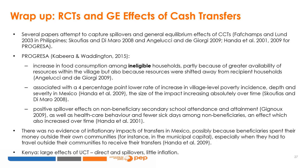Let's wrap up on randomized control trials and general equilibrium effects of cash transfers. Several papers have attempted to capture spillover effects covering PROGRESSA and other programs in Mexico and the Philippines. For PROGRESSA, there are effects in food consumption among eligible households, a reduction in poverty incidence at the village level, and positive spillover effects on non-beneficiary secondary school attendance and attainment, as well as better health care behavior and fewer sick days even for non-beneficiaries. There was no evidence of inflationary impacts of transfers in either Mexico or Kenya, where the unconditional cash transfer program had large effects.